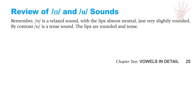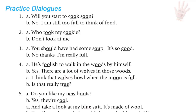Review of U and OO sounds. Remember U is a relaxed sound with lips almost neutral, just very slightly rounded; and OO is a tense sound with the lips rounded and tense.